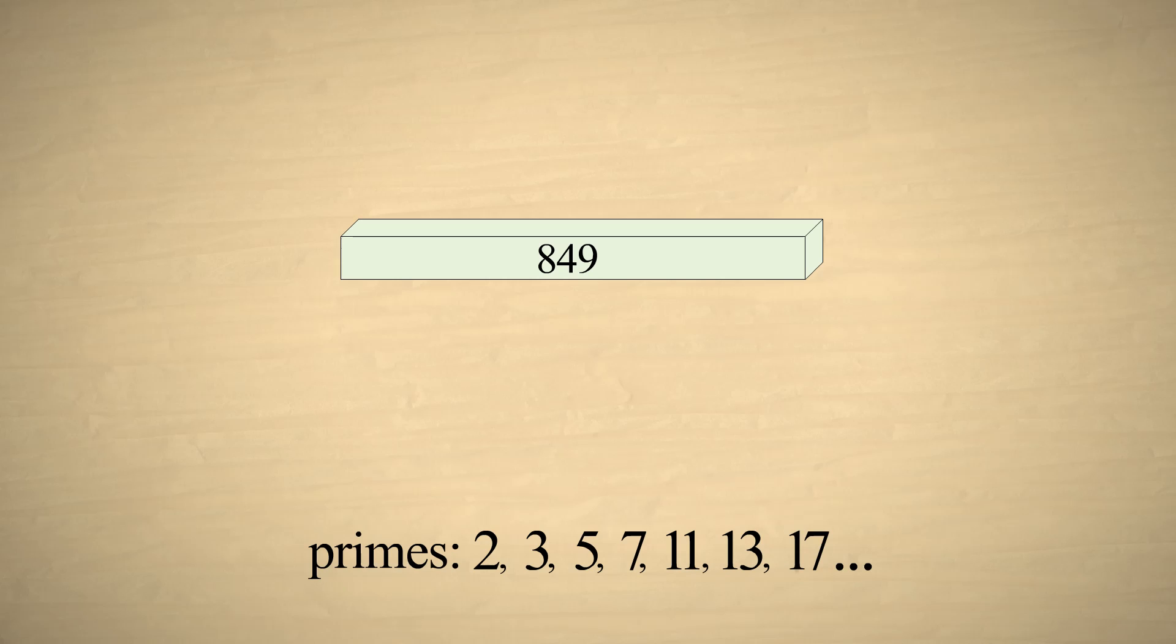Now let's try an example with a number which is not as easy to factor, 849. Once again, we start by testing the smallest prime number, 2. Since 849 is not even, we know that 2 is not a factor. So we go on to the next prime number, 3. Since the digits of 849 add up to 21, which is divisible by 3, 3 is a factor.